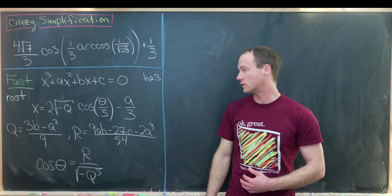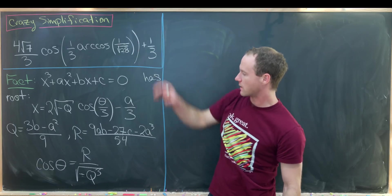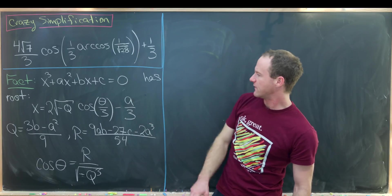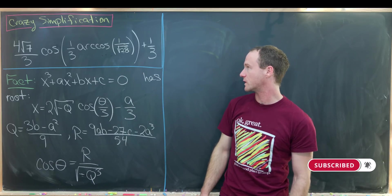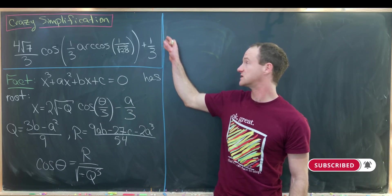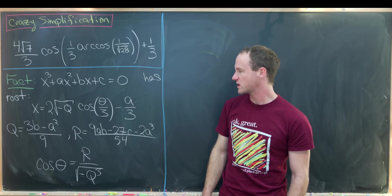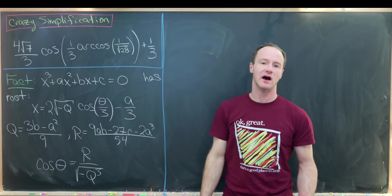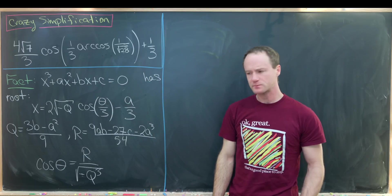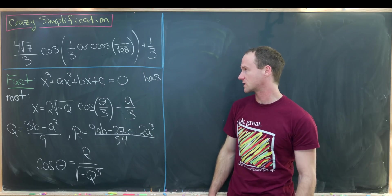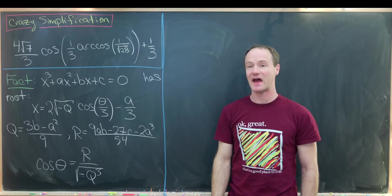This may seem pretty brutal, and to be honest it is. But let's notice that our number up here looks like it's in this form if we replace theta with the inverse cosine of one over the square root of 28. We've got this factor of one third, which looks like it could play the role of minus a over three, and this two times the square root of negative q. So let's see if we can construct a cubic polynomial where this is in fact the root.